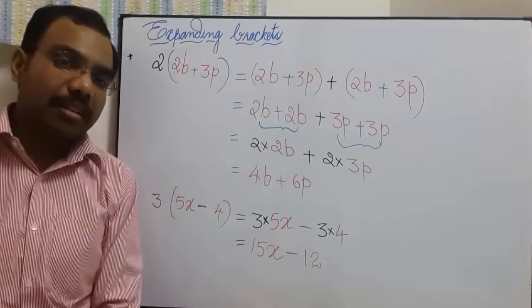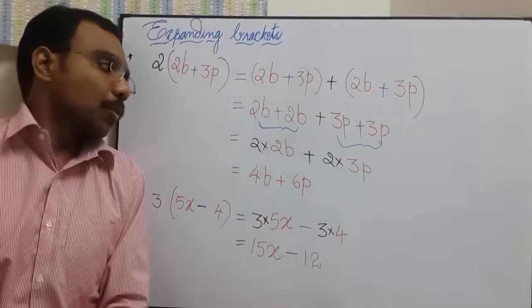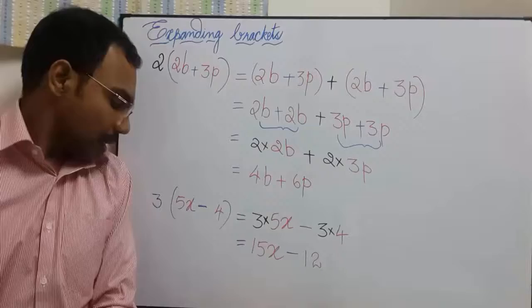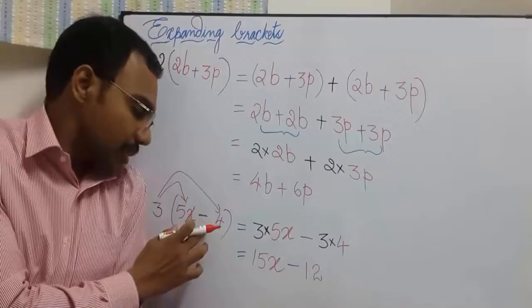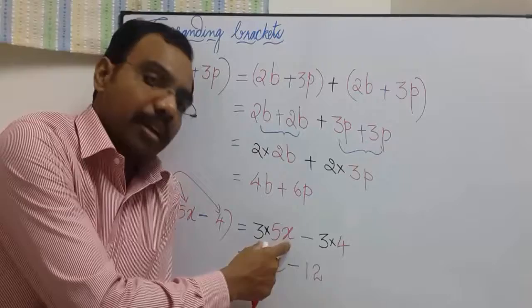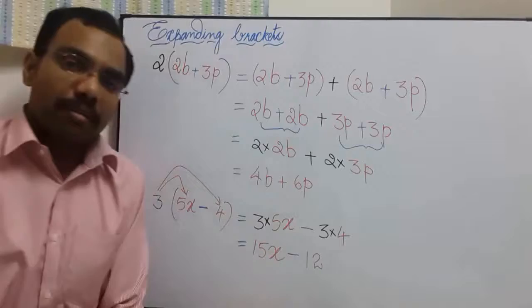Let us take one more example. 3 times of 5X minus 4. Now, we need not write all these steps. So I am just directly doing from this step. So what happens? This will become 3 times of 5X and 3 times of 4. These two terms are separated by subtraction. So we should ensure that they are subtracted. Which means 3 times of 5X from this, 3 times of 4 has been subtracted. So we get 15X minus 12.